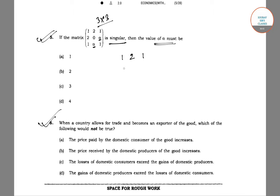So we are writing the three by three matrix: one two one, two zero alpha, one alpha one. Let's name it matrix A. So for A to be singular, the determinant of A must equal zero.